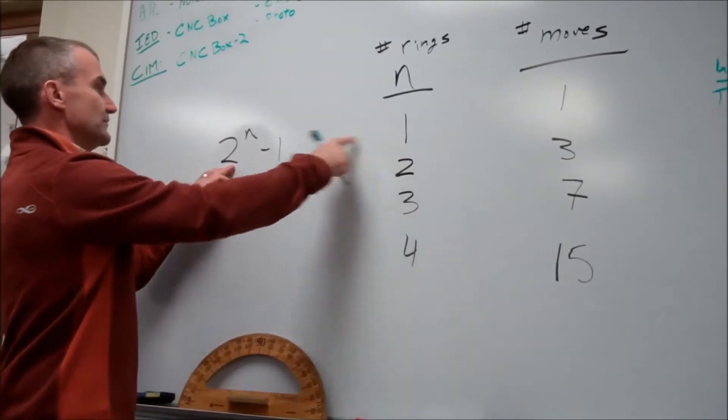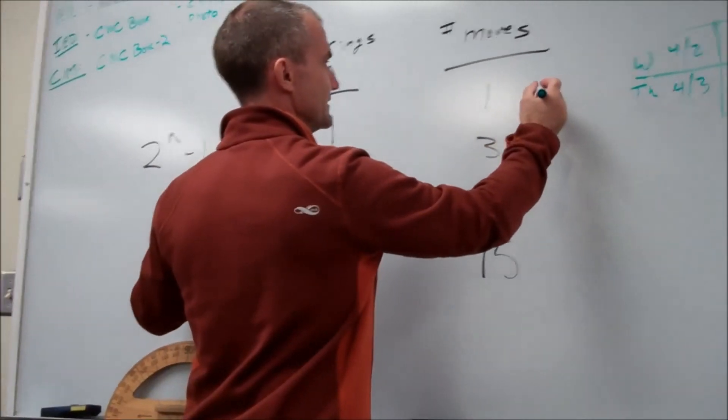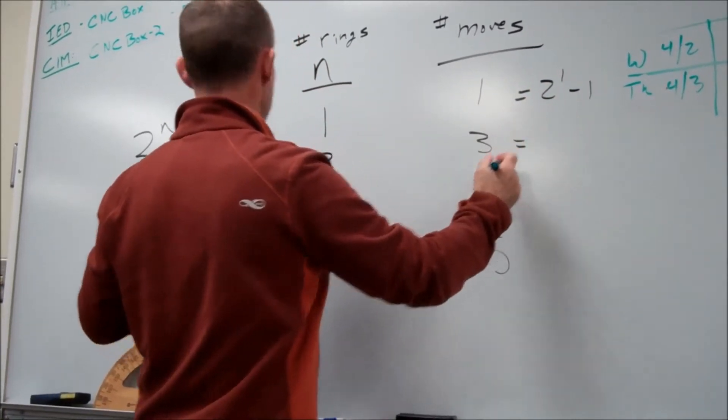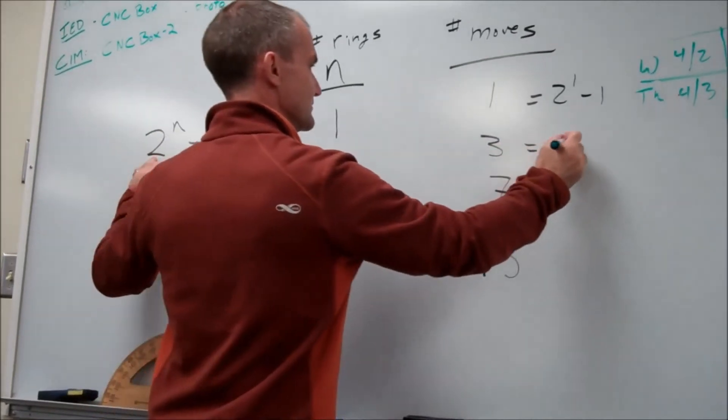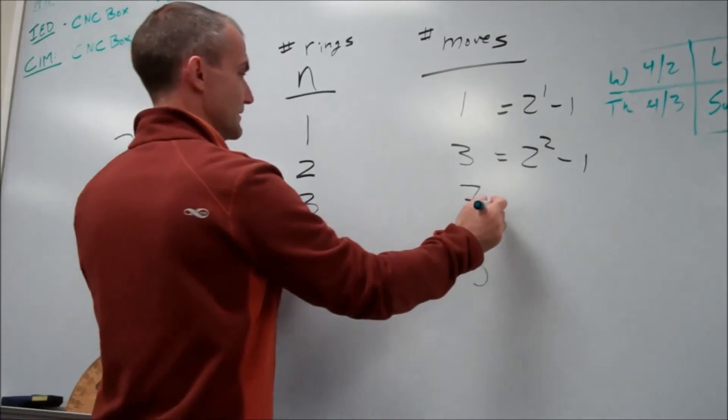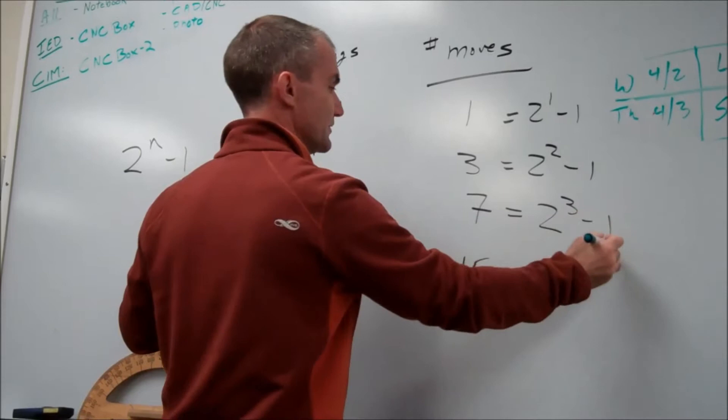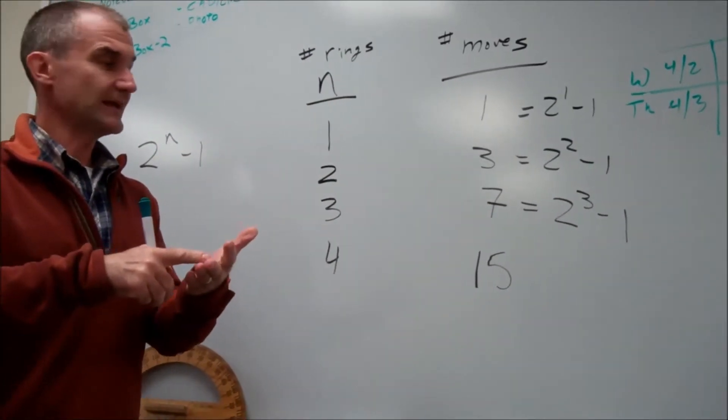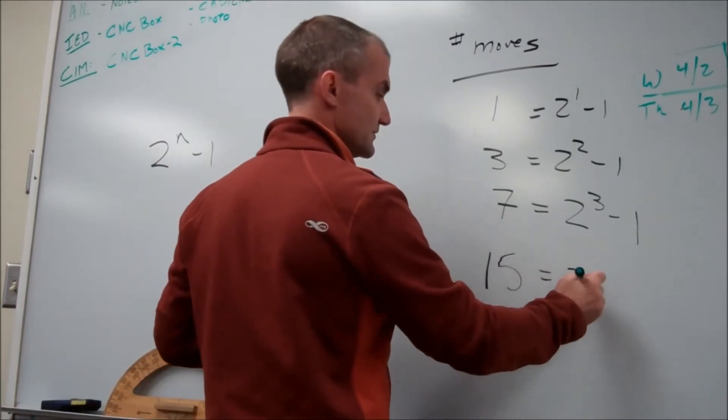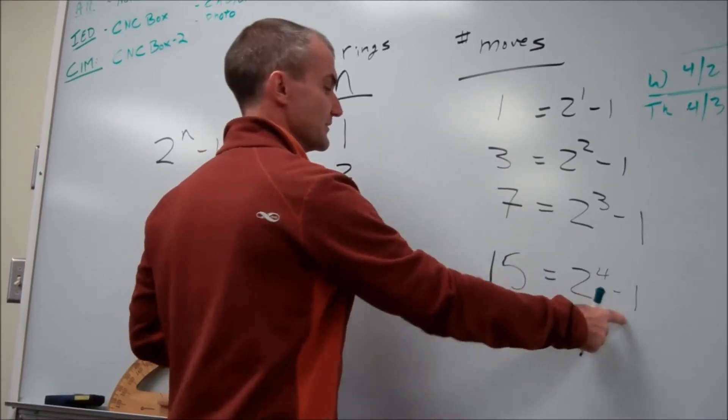So two to the first is two, two minus one is one. So this right here would be equal to two to the first minus one. Two minus one is one. Right here I would have two squared four minus one is equal to three. Right here I would have two to the n number of rings. Two to the third minus one. Two times two, four times two, eight. Eight minus one is seven. And then right here the function is still two to the n. The number of rings minus one. This is sixteen minus one is equal to fifteen.